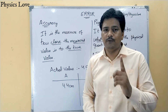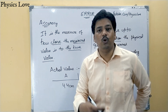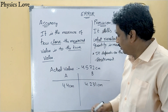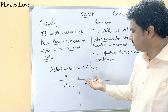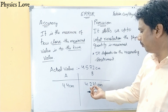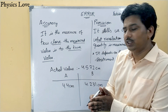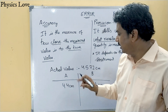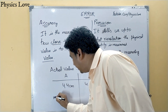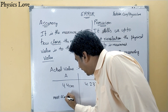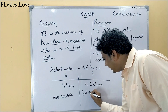Let us talk about accuracy first. Which result is more accurate? 4.4 cm is more close to the true value of 4.572 cm as compared to 4.231 cm. So instrument A's result is more accurate, and instrument B's result is less accurate.